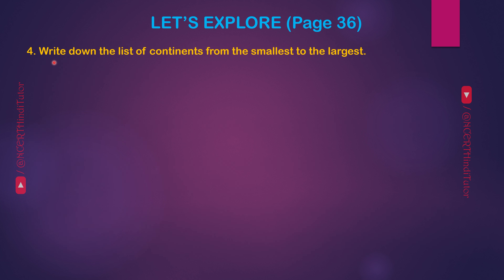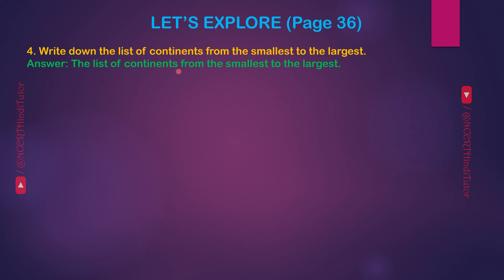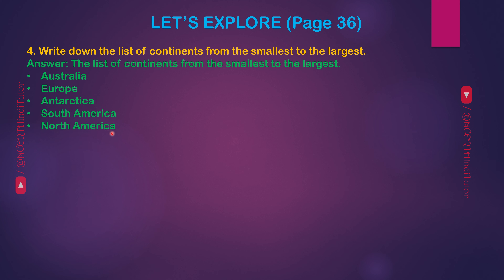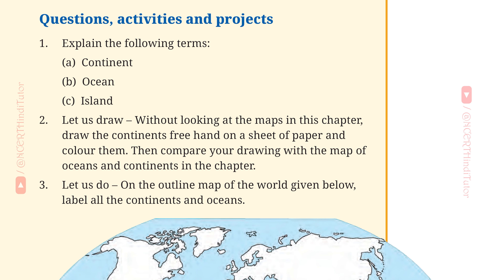Question 4: Write down the list of continents from smallest to largest. Answer: 1. Australia, 2. Europe, 3. Antarctica, 4. South America, 5. North America, 6. Africa, 7. Asia.